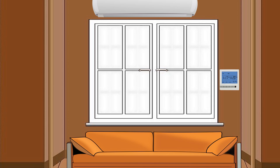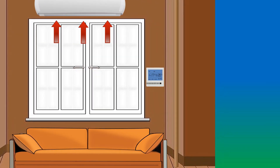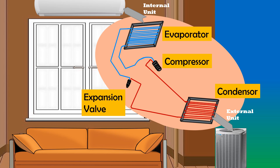When we switch on the AC in a room and set the temperature level, the thermostat senses the difference between room temperature and the temperature we have set. The warm air in the room flows into the evaporator of the air conditioner, which has coils in which liquid refrigerant flows. The refrigerant absorbs heat from the warm air and the air becomes cooler.